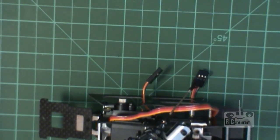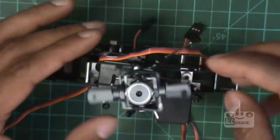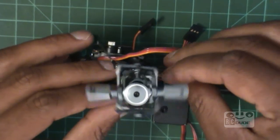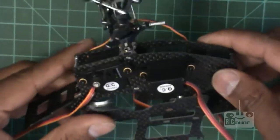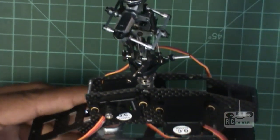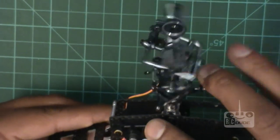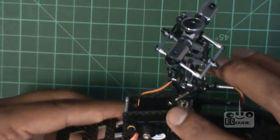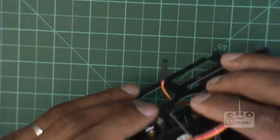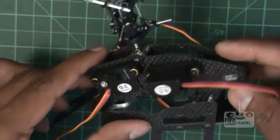Here we go. So you put all the servos like that. You can see that's your elevator, this is your aileron I'm not sure, and there will be the rudder. So that's the first part guys.